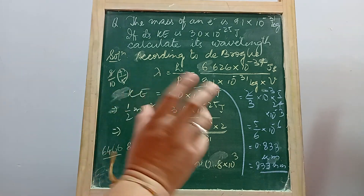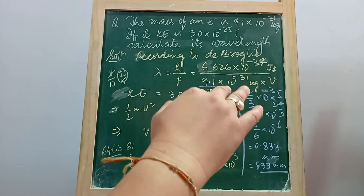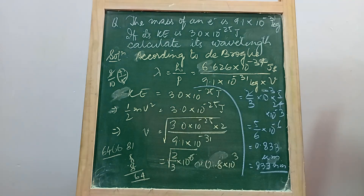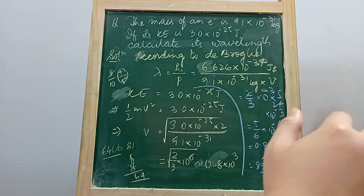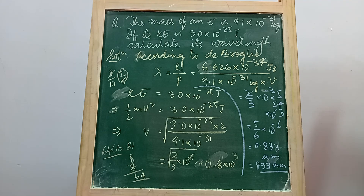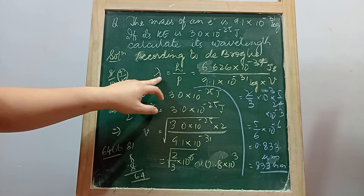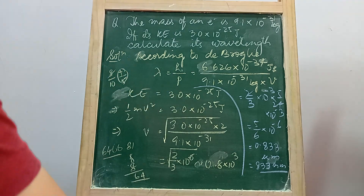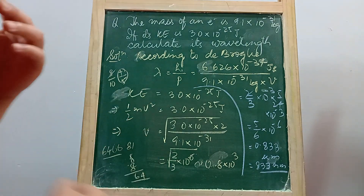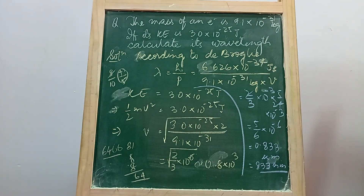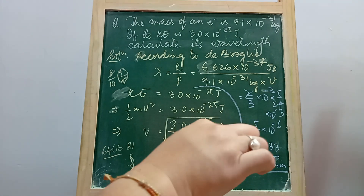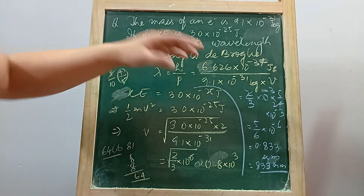The key idea here is that matter also has wave-like behavior. When a particle of some mass moves with some velocity, there are waves associated with it. The relation between the wavelength of the matter wave and its momentum is: λ = h/p, where h is Planck's constant and p is the momentum of the moving body. A moving car, for example, will also have a wavelength associated with it.